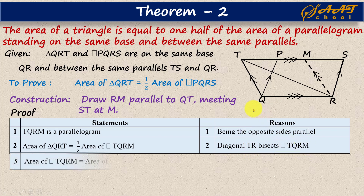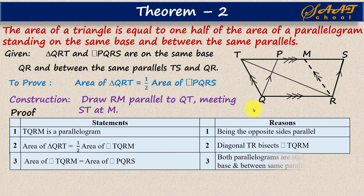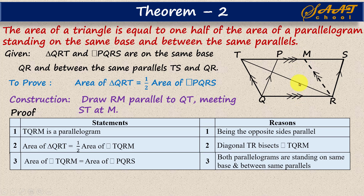The next statement is that the area of parallelogram TQRM equals the area of parallelogram PQRS. This is by Theorem 1. We have two parallelograms — TQRM and PQRS — and they have the same base QR and are between the same parallels. By Theorem 1, two parallelograms standing on the same base and between same parallels are equal in area, so those two areas are equal.